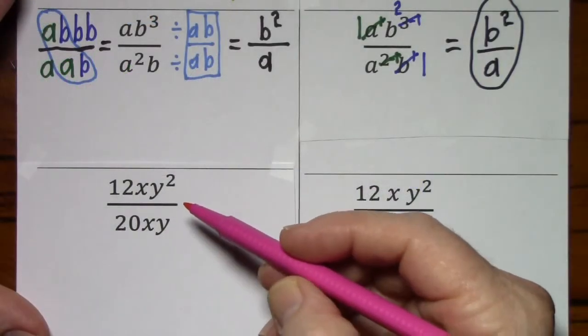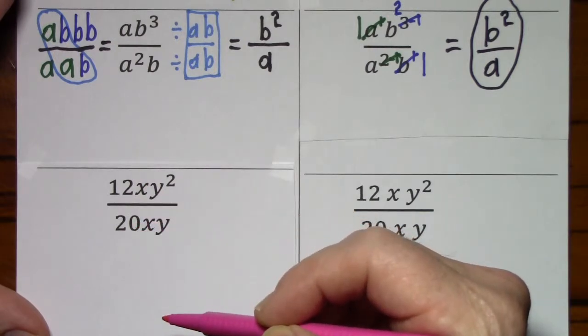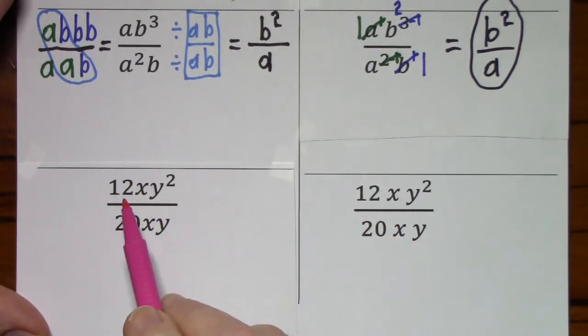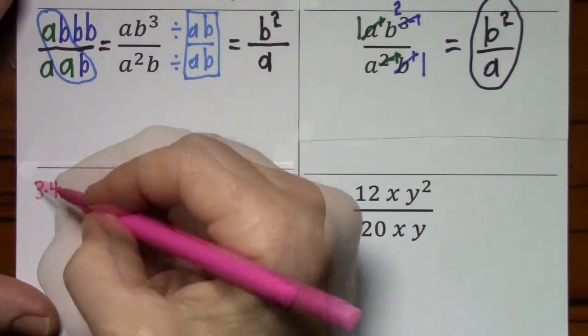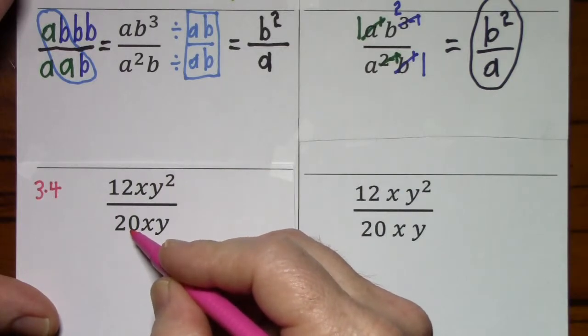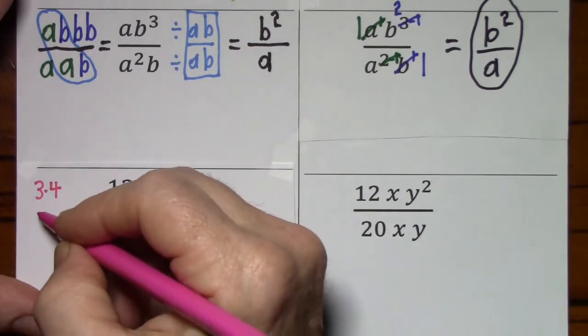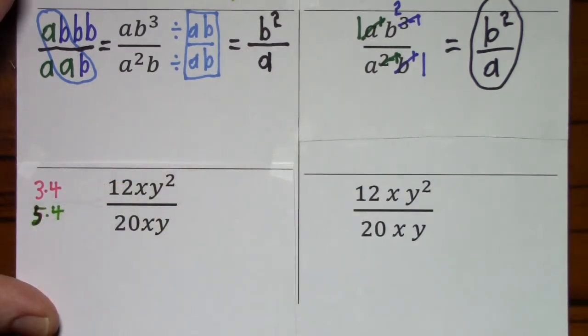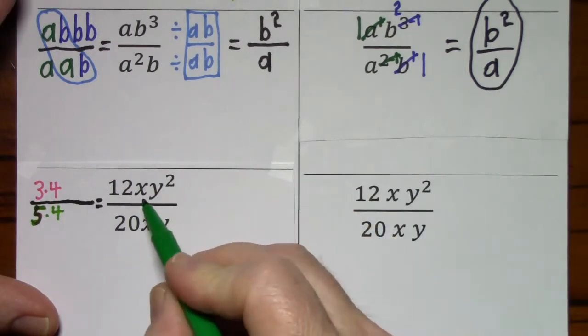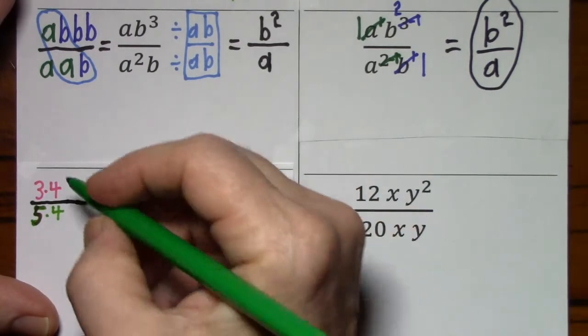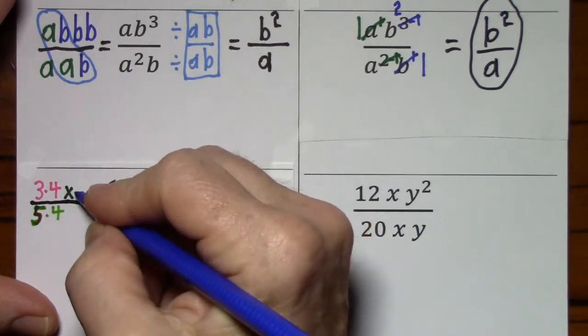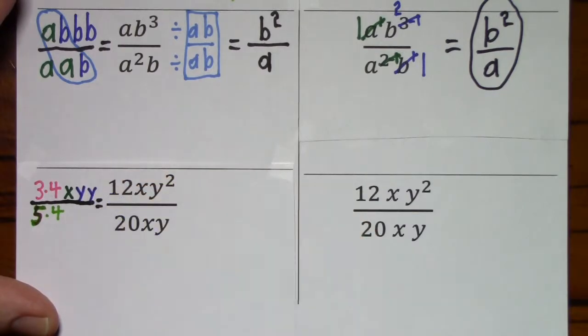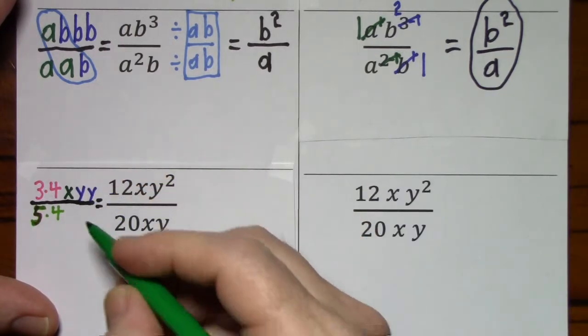The biggest number that will divide both 12 and 20 is 4. So if I want to write the factored form with 4 revealed, I can write 3 times 4. And for 20, if I want to write the factored form, or I should say a factored form, I'd be 5 times 4. And then to show this numerator with the variables in factored form, it's just going to be x. And then for y squared, y times y. And in the denominator, we simply have x times y.